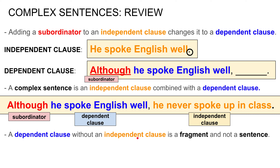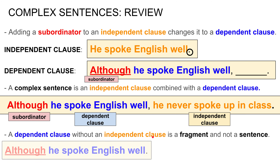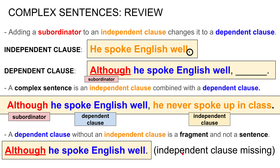Why do we call this a dependent clause? Because a dependent clause without an independent clause is a fragment — it's not a sentence. In order to be a complete sentence, it needs the independent clause. So 'Although he spoke English well' with just a period is not a sentence; it's a fragment, because the independent clause is missing.